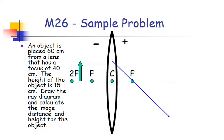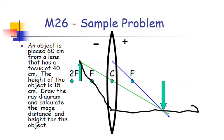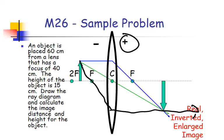We have our parallel ray, the center ray, and our image will show up here. We could do the focal ray as well — come down. So it should be real, inverted, and enlarged. It's real because it's on the positive side where the refracted rays go, so the rays refract here as they go through, and it's inverted and enlarged.